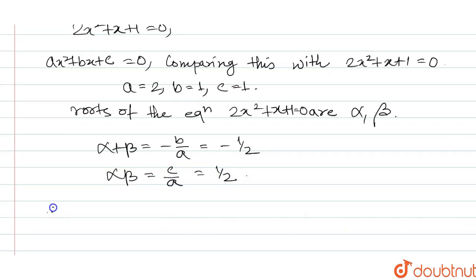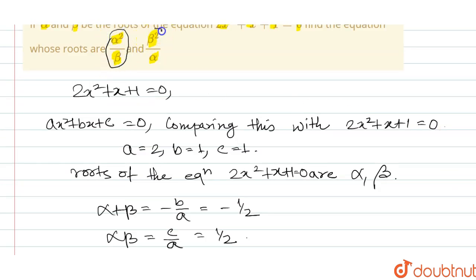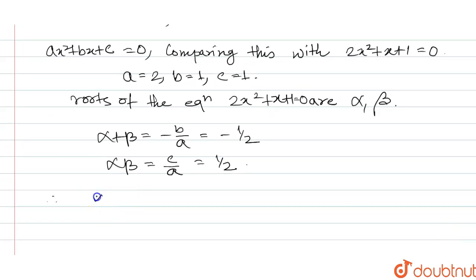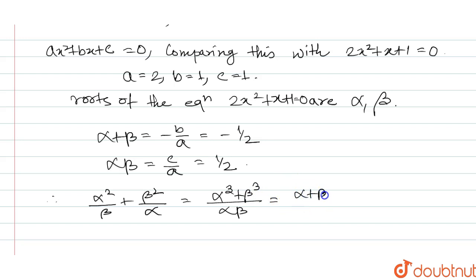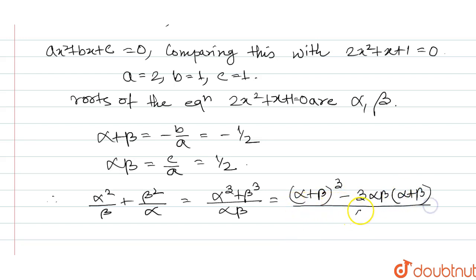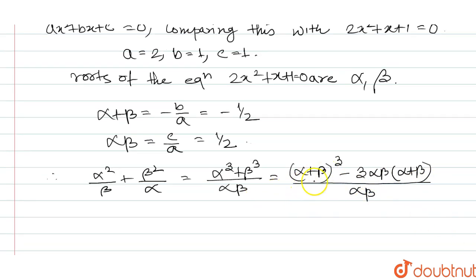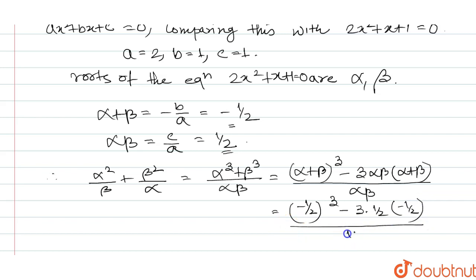Now we have to find the sum of the new roots: alpha squared divided by beta plus beta squared divided by alpha. This equals alpha cubed plus beta cubed divided by alpha beta. Using the identity, alpha cubed plus beta cubed equals (alpha plus beta) times (alpha squared minus alpha beta plus beta squared), and alpha plus beta equals minus 1 by 2, giving us minus 5 by 4.